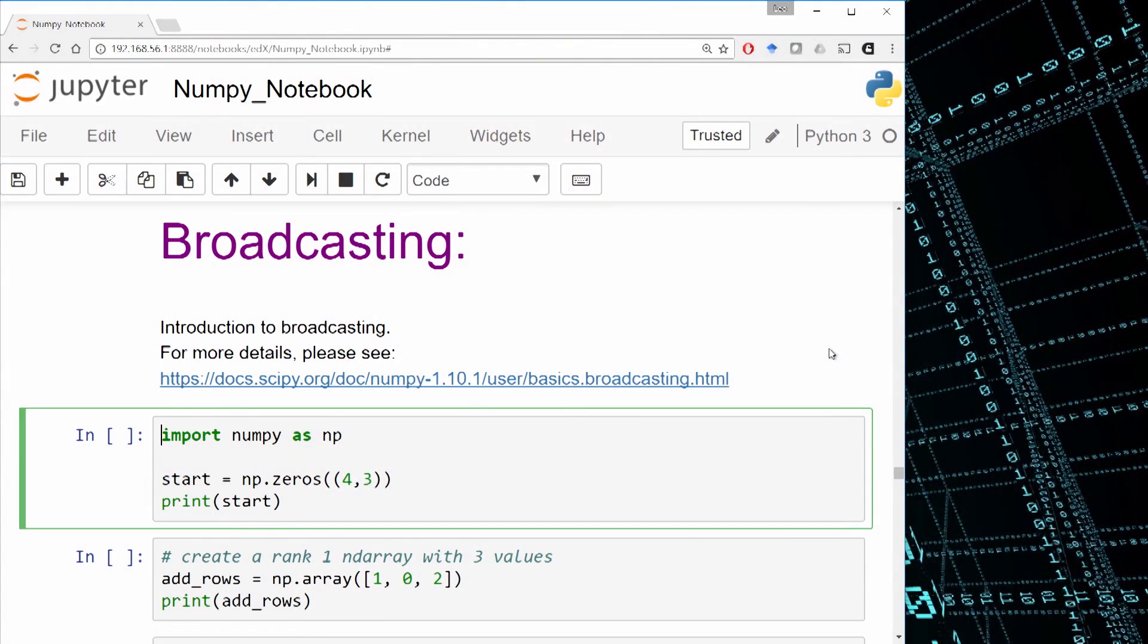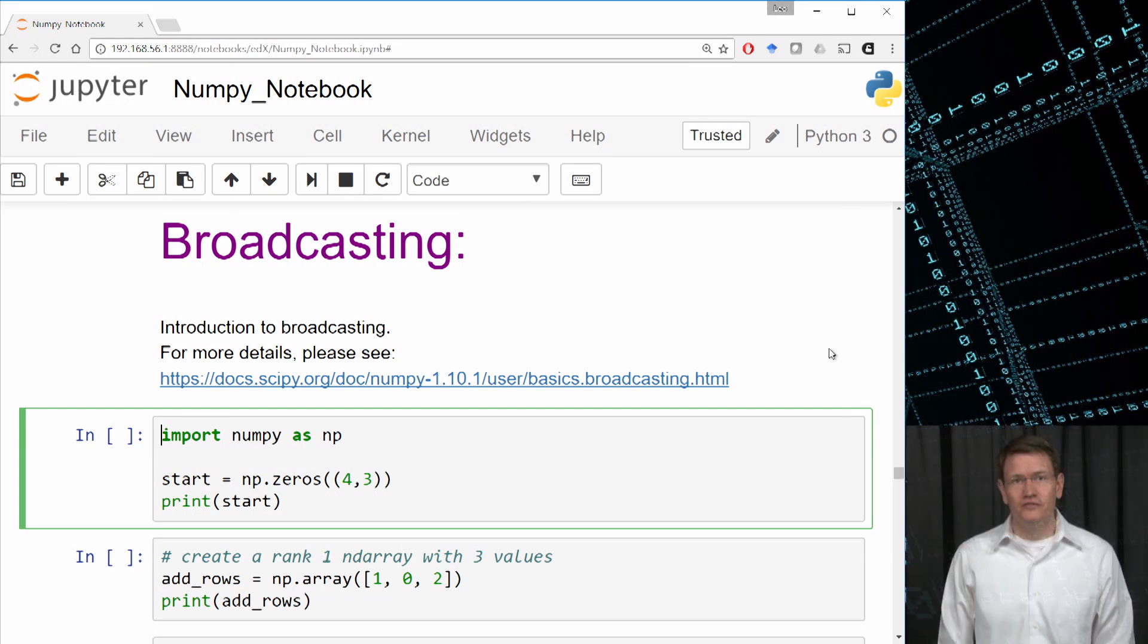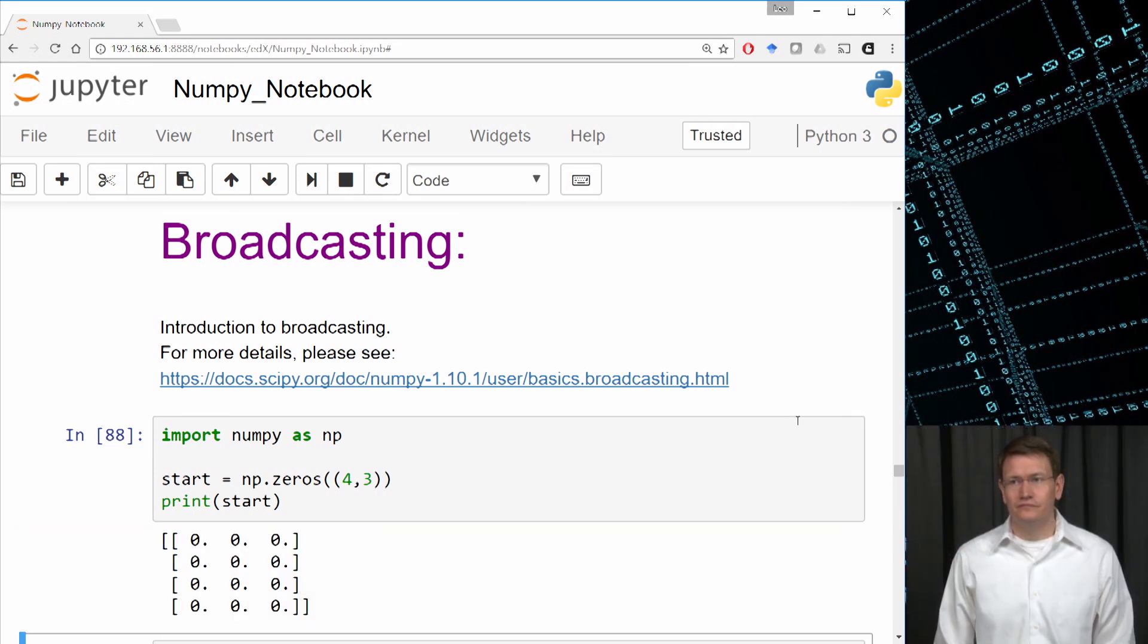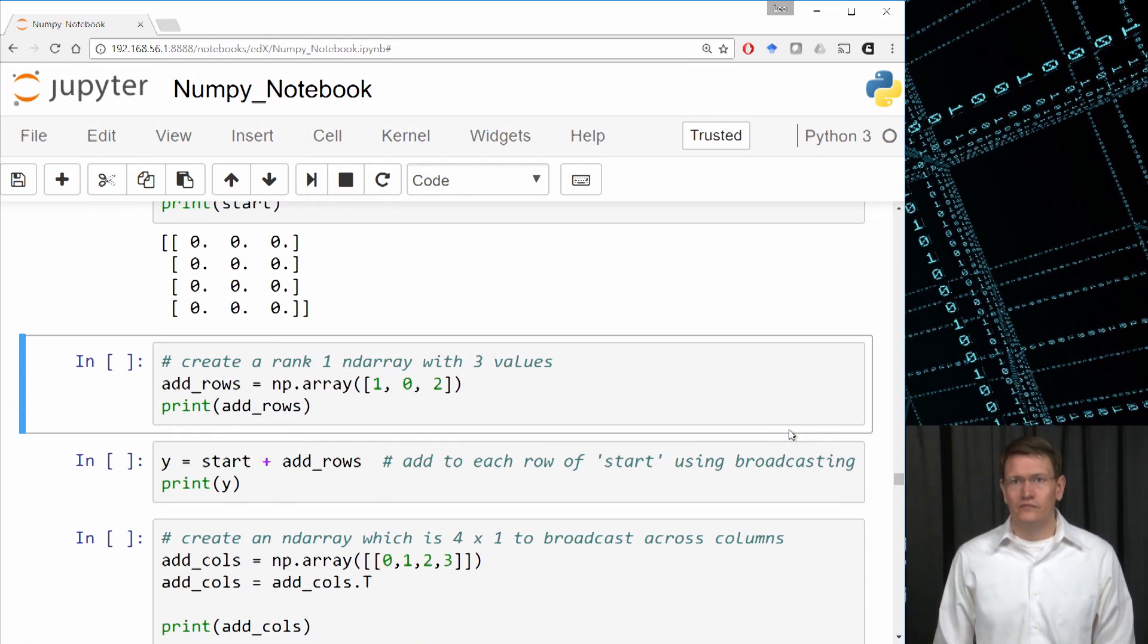First, we'll create a 4x3 ND array and fill it with zeros. Now we'll create a 3x1 array with the values 1, 0, and 2.